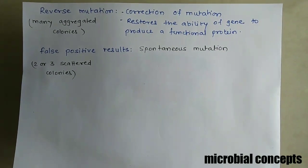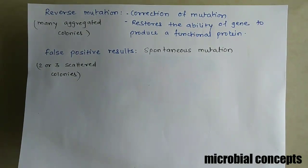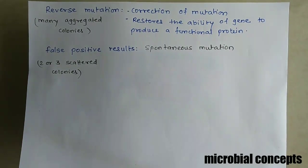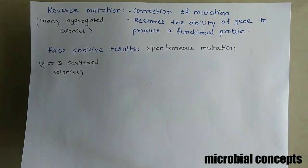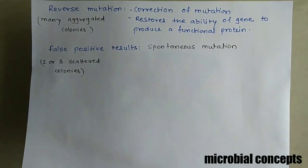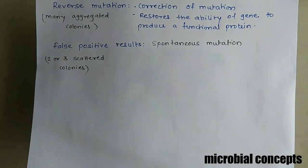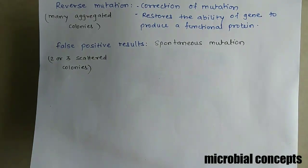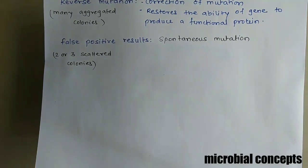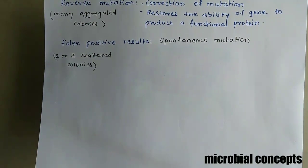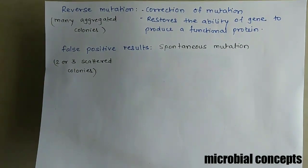Reverse mutation is the correction of a mutation. If there is something wrong in your DNA information, it gets corrected — that is a reverse mutation. In this case, the histidine-producing gene has regained its ability to produce the functional protein. On the plate, if you get many aggregated colonies, this is the true positive result for reverse mutation.